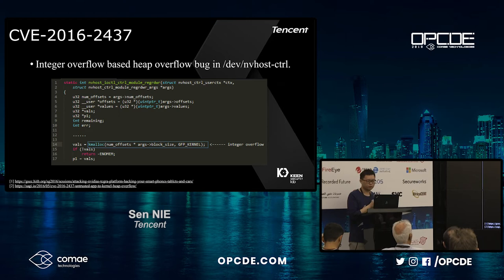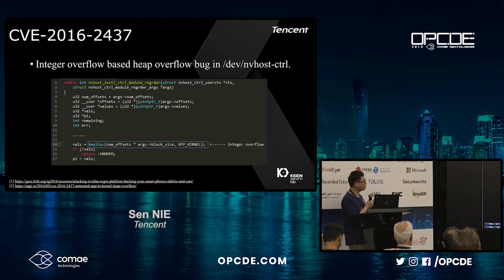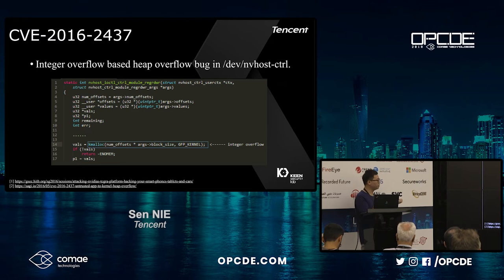The first one was published by a Chinese security researcher named Peter Pi at HITB. From the picture, we can see that num_offsets and block_size are totally user-controlled, but before the kmalloc call there is a lack of input validation. This is a typical heap overflow bug.